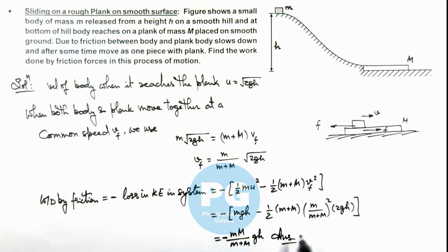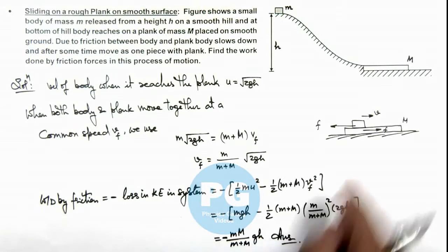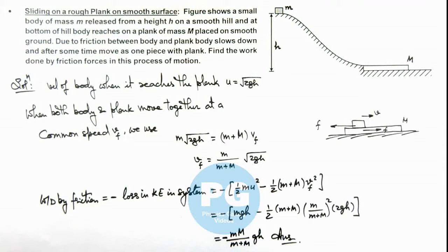That is the work done by friction which is negative the loss in total kinetic energy, is basically the amount of heat dissipated so here negative of loss in total kinetic energy of system is the work done by friction.